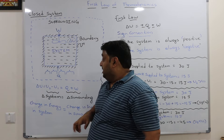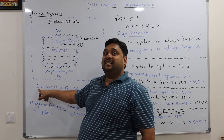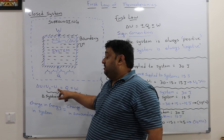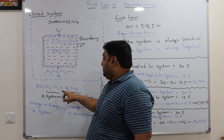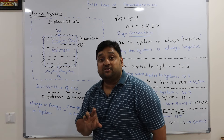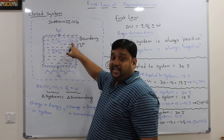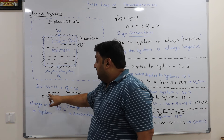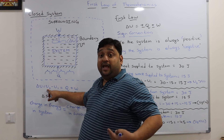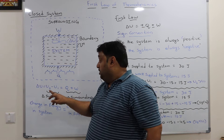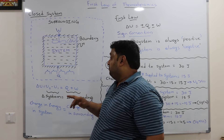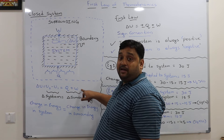Let us define delta U — the change in internal energy from state 1 to state 2 — that is U2 minus U1. The change in internal energy is contributed by supplying heat or supplying work. That is the basic definition of the first law. U1 is the internal energy before supplying heat or work, and U2 is after; U2 minus U1 is the change between the two states.